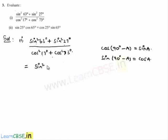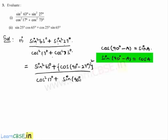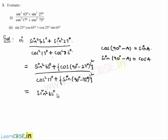Let sin²63° remain as is, and sin 27° = cos(90° - 27°) = cos 63°, so sin²27° = cos²63°. In the denominator, cos²17° remains as is, and cos 73° = sin(90° - 73°) = sin 17°. So the numerator becomes sin²63° + cos²63°, and the denominator becomes cos²17° + sin²17°.